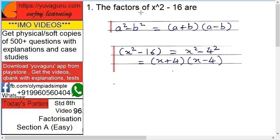Let's find the factors of x² - 16. Remember this formula — it's an identity: a² - b² equals (a + b)(a - b). Convert x² - 16 into this form: 16 is 4², so x² - 16 equals x² - 4², which factors as (x + 4)(x - 4).